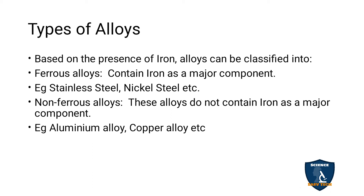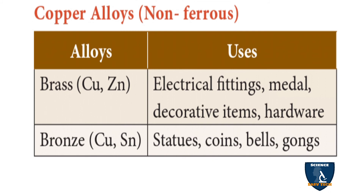Types of alloys: based on the presence of iron, alloys are divided into ferrous alloys and non-ferrous alloys. Ferrous alloys have iron as the major component — examples are stainless steel and nickel steel. Non-ferrous alloys do not contain iron as the major component — examples include aluminium alloys and copper alloys. Copper alloys include brass (copper and zinc, Cu and Zn), used for electrical fittings, medals, decorative items, and hardware; and bronze (copper and tin, Cu and Sn), used for statues, coins, bells, and gongs.